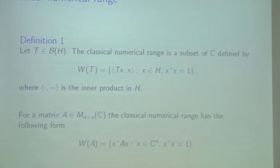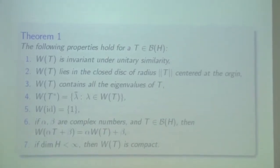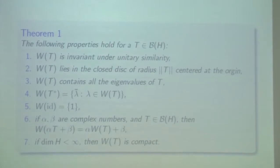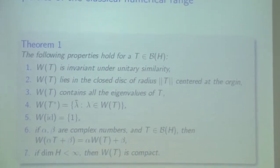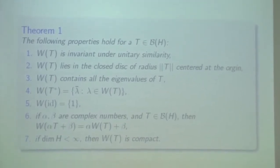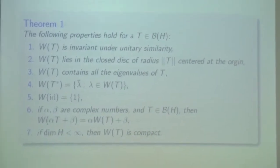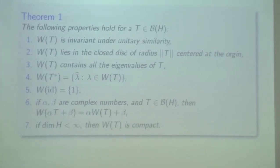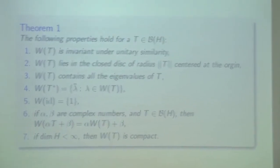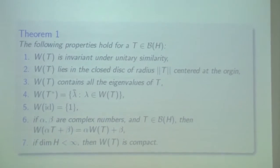Now we recall some basic properties of the classical numerical range. The subset is invariant under unitary similarity, lies in the closure of this operating space and origin, and contains all eigenvalues. The last property is that if the dimension of H is finite, then the classical numerical range is compact.